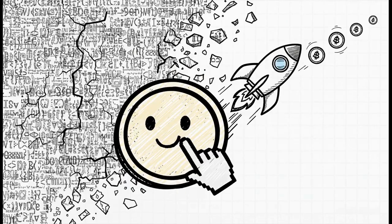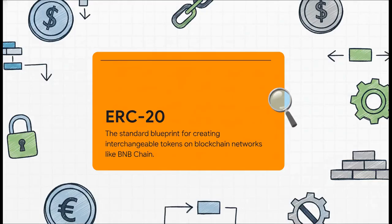Well, now it isn't. With tools like TokenTree, you can launch on BNB chain without writing a single line of code. It's basically the universal rulebook for tokens, making sure yours plays nice with everything on BNB chain.